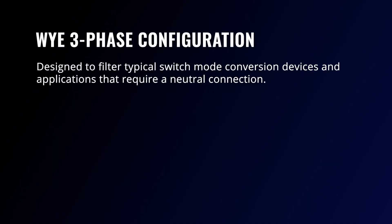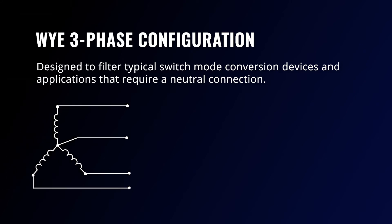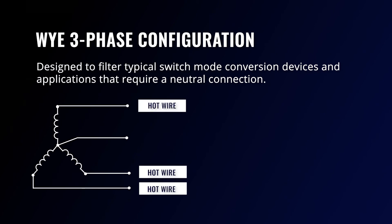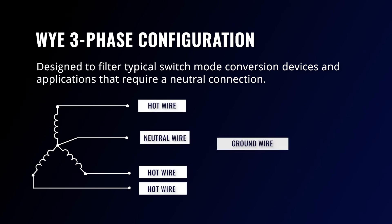Y EMI filters are designed to filter typical switch mode conversion devices and other applications that require a neutral connection. This configuration is composed of five wires: three hot conductors, a neutral wire, and a ground wire. In a Y configuration, the three-phase loads are connected at a single point. This configuration allows the use of lower voltage capacitors, which can lead to savings in cost, weight, and volume.